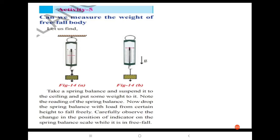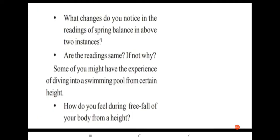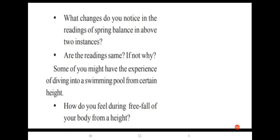When the spring balance is allowed to fall freely with the load, its indicator shows zero reading. These readings are not the same. When the spring balance is allowed to fall down, the total weight of the balance and the object are pulled down towards the Earth's center, so the two readings are not equal.